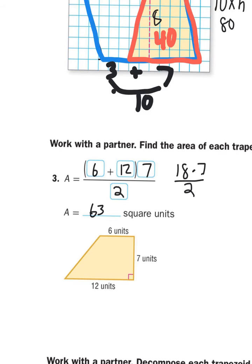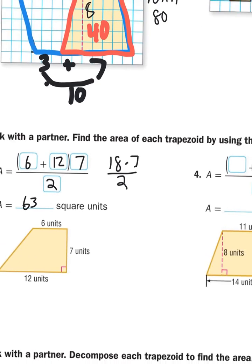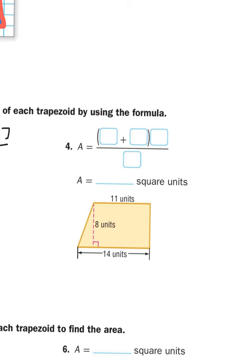For number four, which you'll do on your own, remember it's base 1 plus base 2 times the height, all divided by two. Take the numbers from the diagram, put them in the right spots, and don't forget to divide by two, and you'll have the area of the trapezoid.